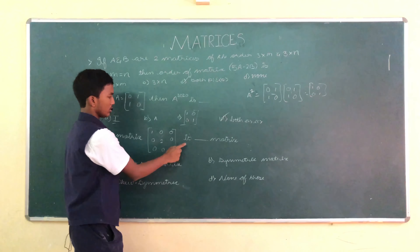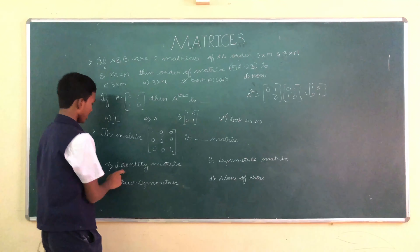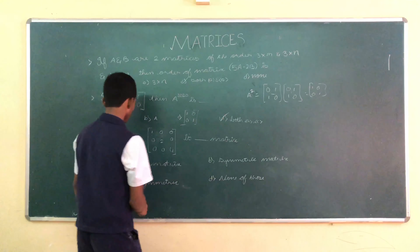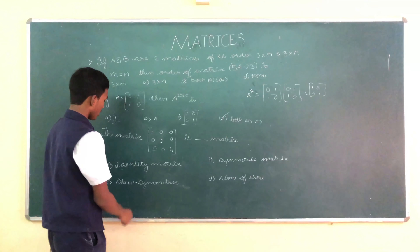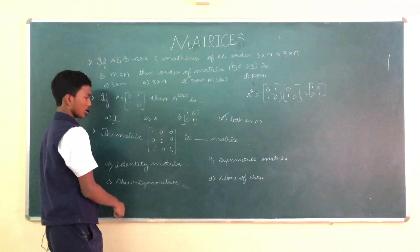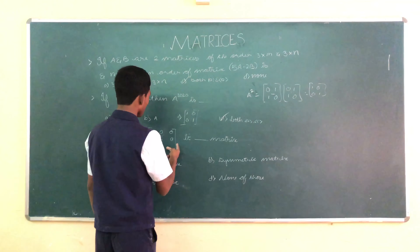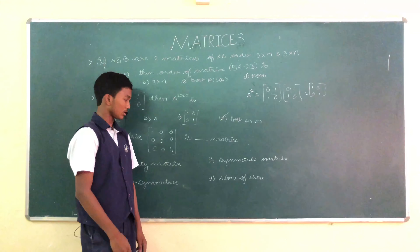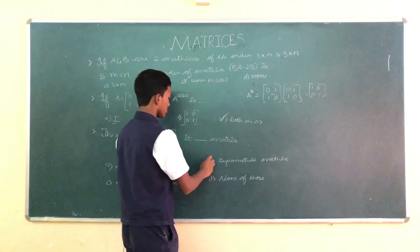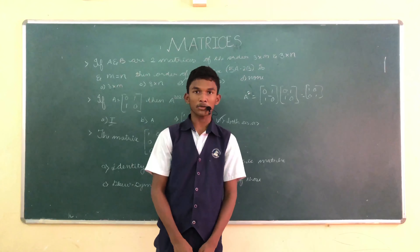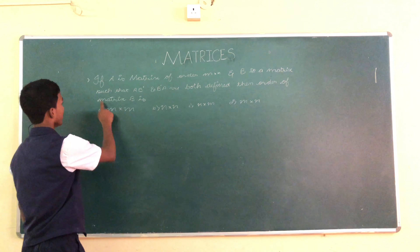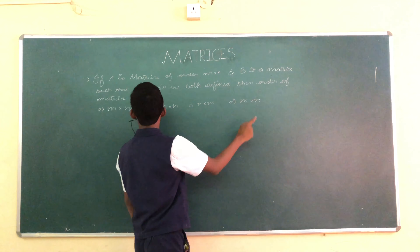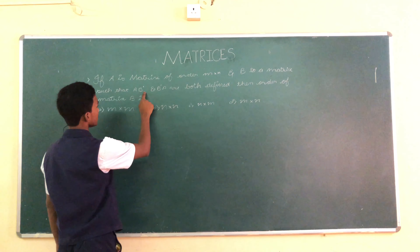Next question: the matrix [1,0,0; 0,2,0; 0,0,4] is a dash matrix. Option A: identity matrix. Option B: symmetric matrix. Option C: skew-symmetric matrix. Option D: none. It's not an identity matrix. It is a symmetric matrix because A transpose equals A. It's not skew-symmetric because A transpose ≠ −A. So the correct answer is symmetric matrix. Note: all diagonal matrices are symmetric.